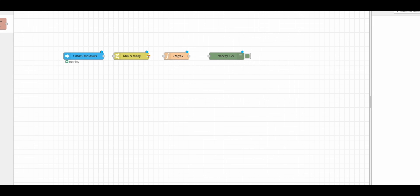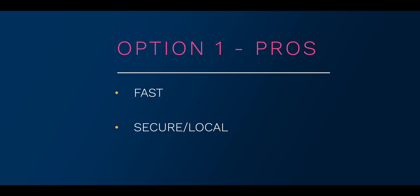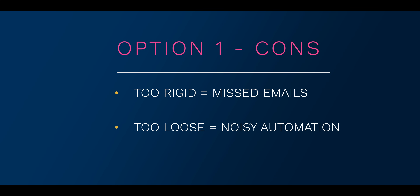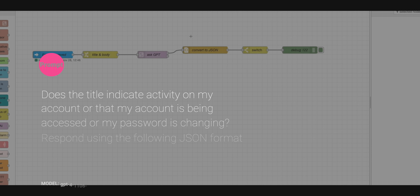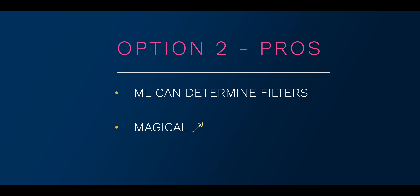There are two ways I can go about this. I can create an automation that reads the body and looks for specific phrases like 'password' or 'account.' The pro is that it's fast and the information stays local. The issue is I can miss emails if my phrasing is too strict, or get a lot of false positives if it's too loose. The other method would be to use GPT — I can send data directly to GPT and ask it if the data indicates my account has been accessed or if the password or email has been changed. The pro is that I don't really have to think about the filters; GPT should be able to decipher this based on my instructions.